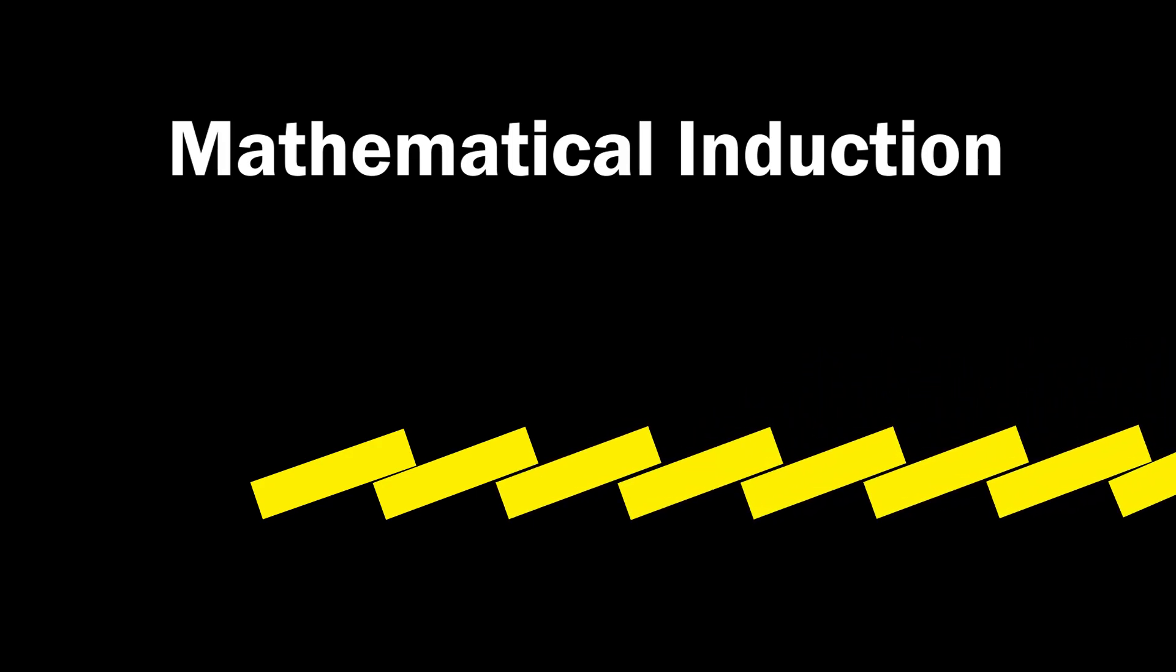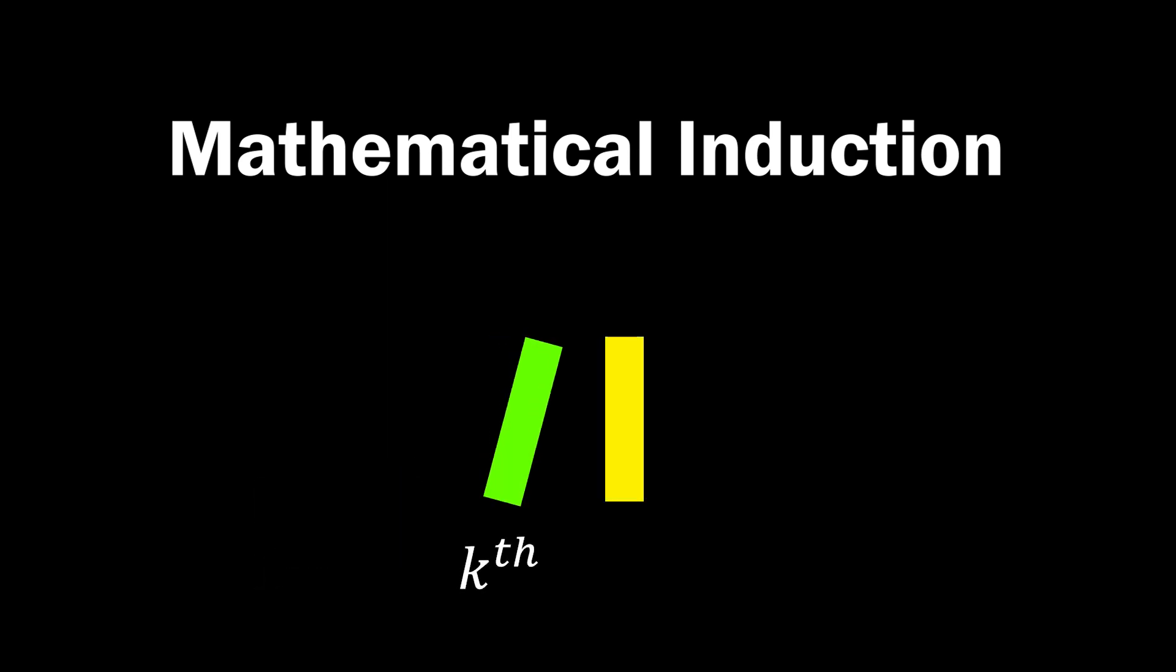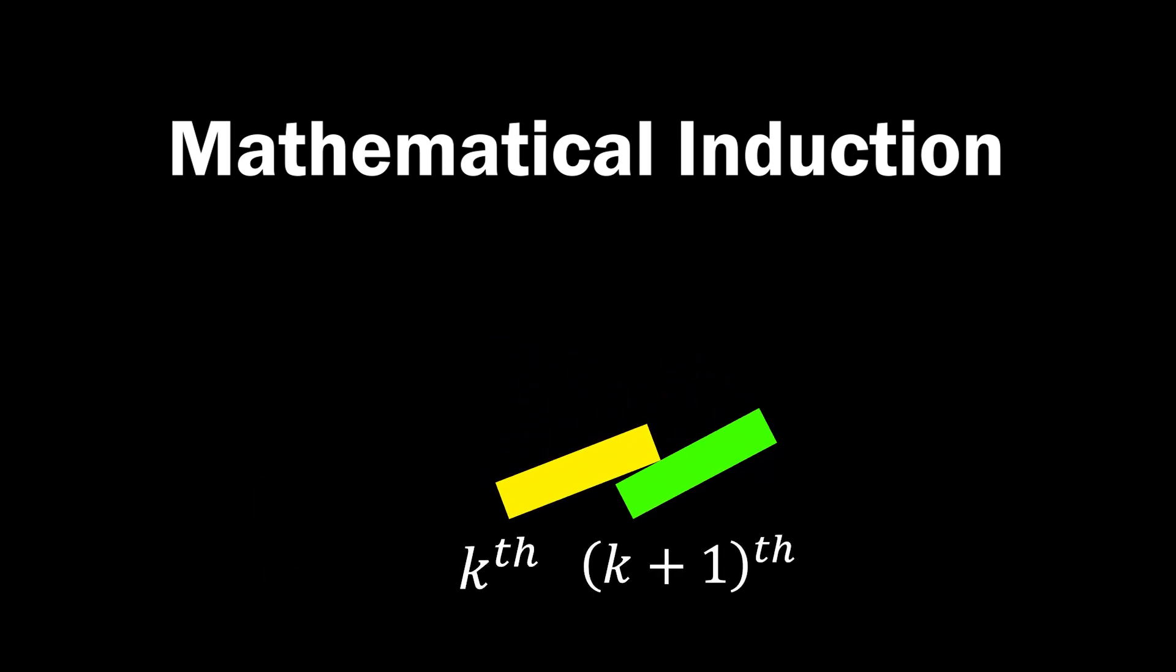So let's summarize the conditions for all dominos to fall into two simple rules. Number one, the first block falls. Number two, if the kth block falls, then the k plus 1th block also falls. If these two conditions are met, we can conclude that all domino blocks will fall.